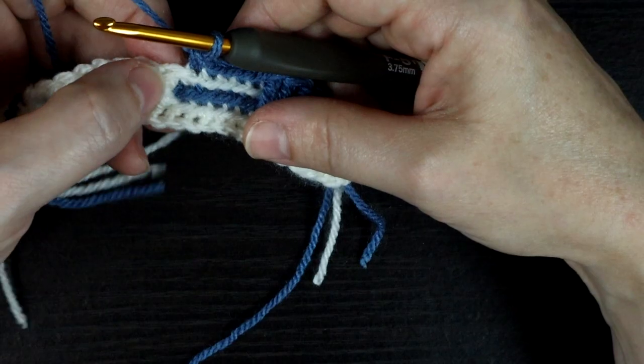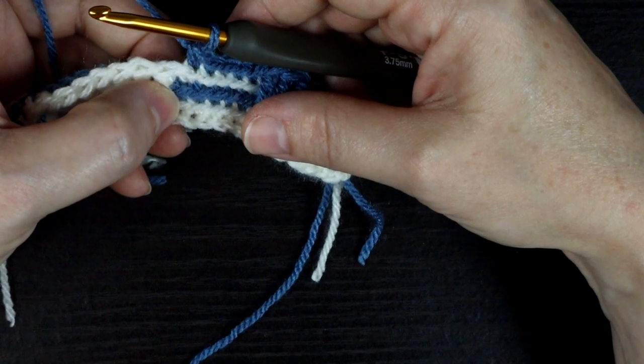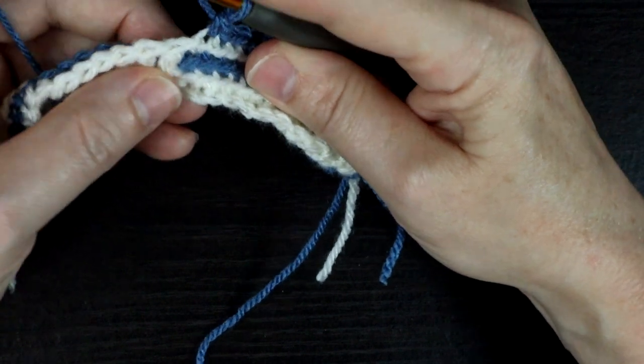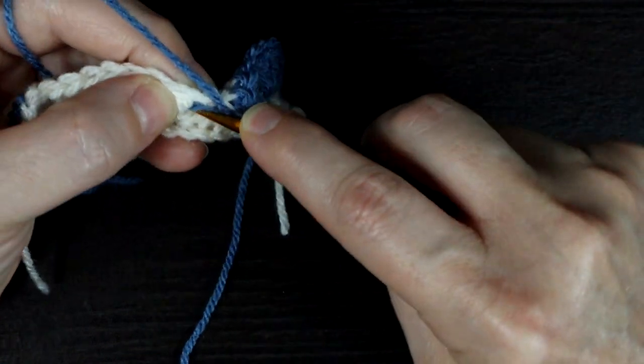Here's the mirror image of the slanted bar symbol. It means drop double crochet one stitch to the right. Here's how to work it. Find your next stitch and count back one to the right. Again I give the angled stitches a little more slack so they don't pull.